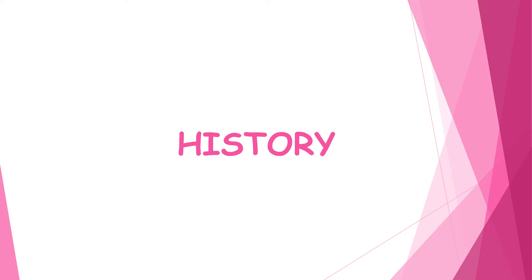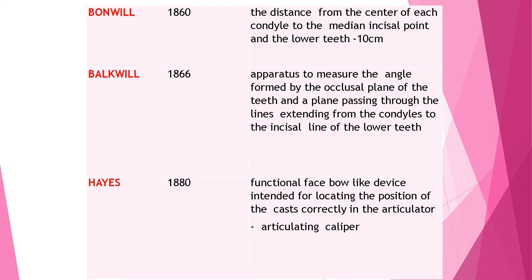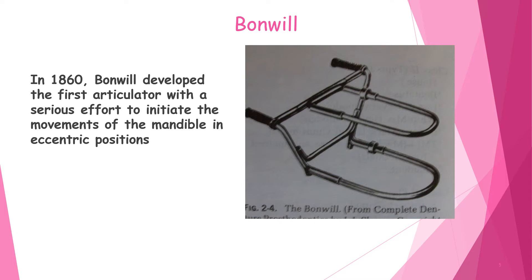Coming to the history of the facebow: in 1860, Bonwill determined the distance from the center of each condyle to the median incisal point of the lower teeth is 10 cm. In 1866, Backwill invented an apparatus to measure the angle formed by the occlusal plane of the teeth and the plane passing through lines extending from the condyles to the incisal line of the lower teeth. In 1880, Hayes developed a functional facebow-like device intended for locating the position of cast correctly in the articulator using articulating tape.